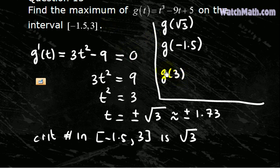So let me do first g of 3: 3 cubed is 27, minus 27 plus 5 is 5.